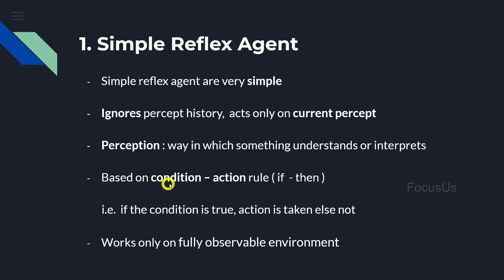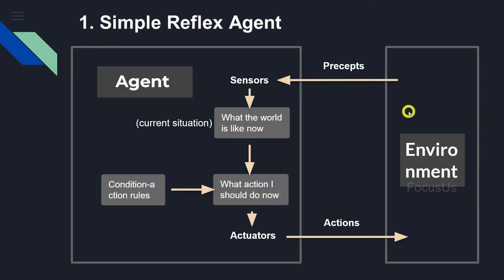A simple reflex agent is based on the condition-action rule, which is basically an if-then rule: if a condition is true, an action is taken, else not. Another important thing is that a simple reflex agent only works in a fully observable environment. That means it only succeeds if all the rules defined about the environment are correct, so the agent must know everything about the environment to get all the rules right.